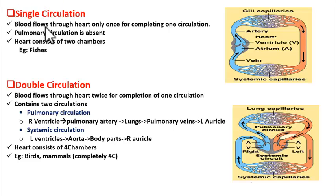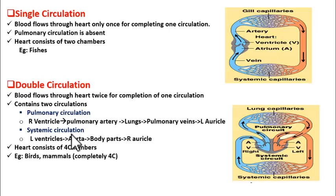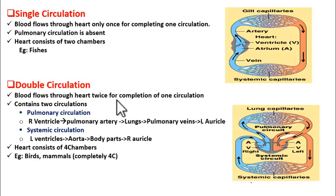Good morning students, today we shall study about single circulation and double circulation. We shall first take up double circulation and then come back to single circulation, because double circulation takes place in human beings and we have already studied about the human circulatory system, the blood circulatory system, in detail. So what is double circulation? In this type of circulation, blood flows through the heart twice for the completion of one circulation.